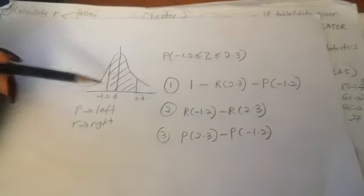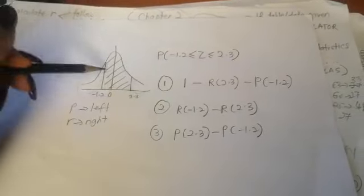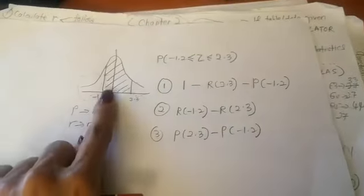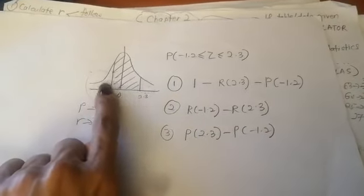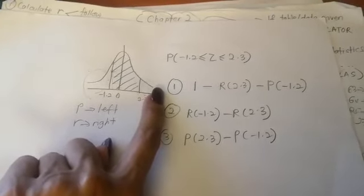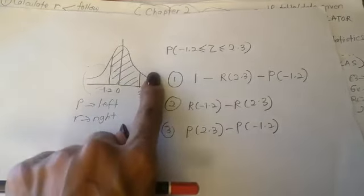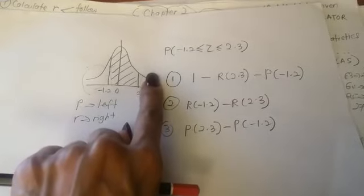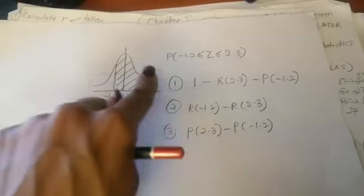R of negative 1.2 means you're taking the whole right side. Then you minus R of 2.3 so it stops there, and you only take the middle.